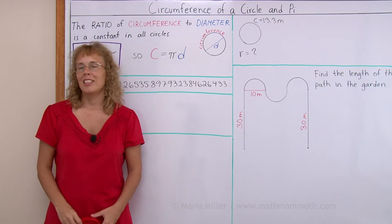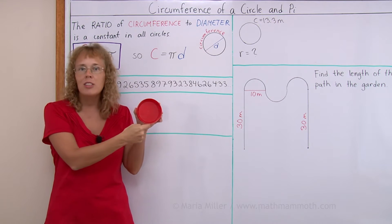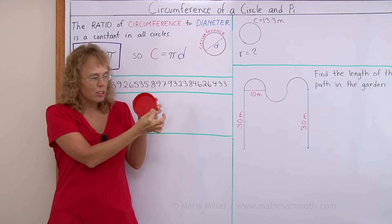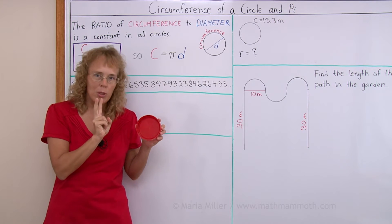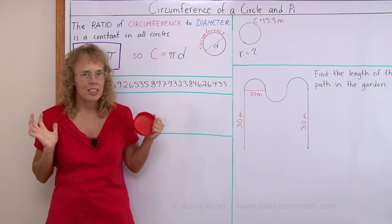If you were to take different kinds of circles and measure the circumference, or all the way around the circle, and then also measure the diameter, or across the circle, measure those two numbers and then take the ratio. Let's say you did that to many circles, different sized circles.